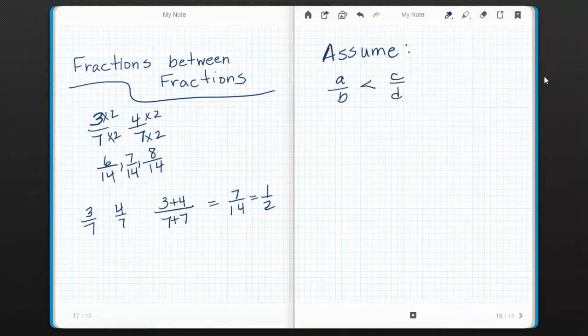In proofs in algebra, we almost always use variables in place of all the numbers, so that when we get to the end of our proof, we've proved it for any numbers. So for any fraction, A over B, that's less than a fraction, C over D, what you want to prove is that A plus C over B plus D is between A over B and C over D.